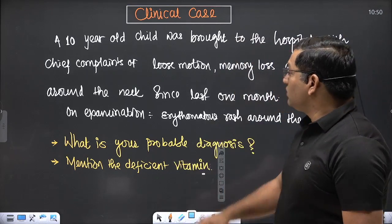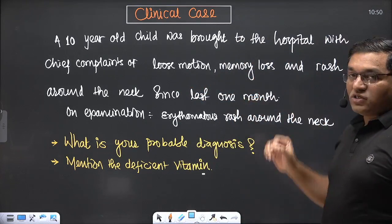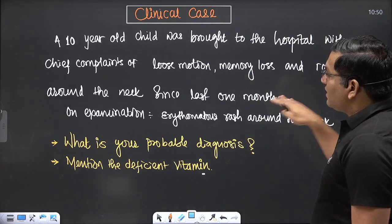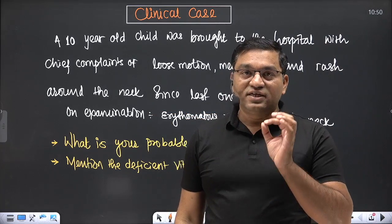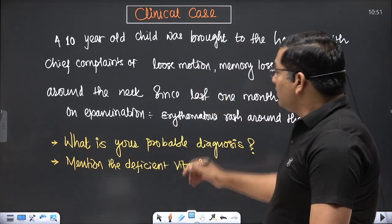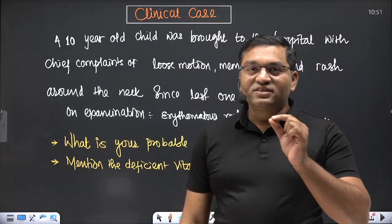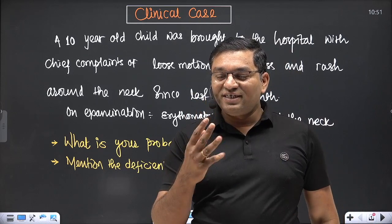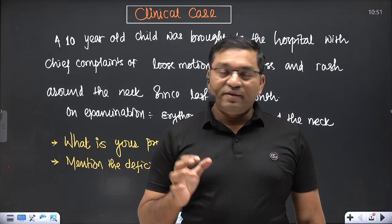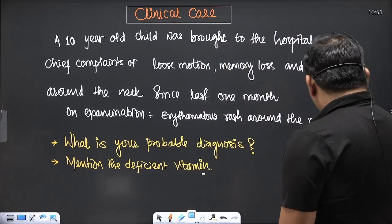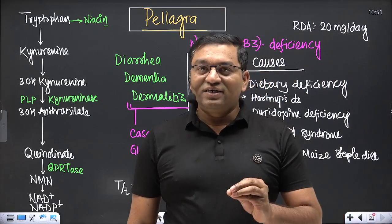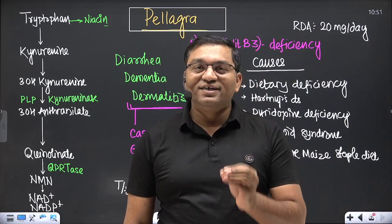Loose motions means diarrhea; memory loss means dementia; and rash around the neck means Casal's necklace dermatitis. These are the classical three D's: diarrhea, dementia, and dermatitis. This is a feature of pellagra — niacin deficiency. So the deficient vitamin is niacin.